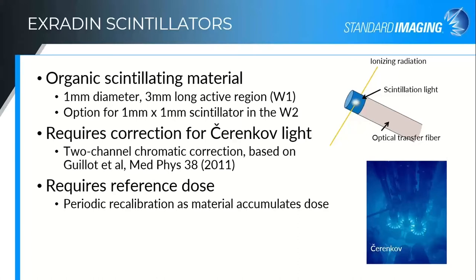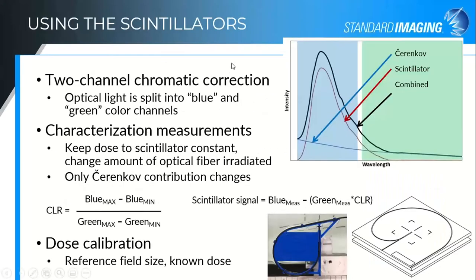You do need to recalibrate it periodically as it accumulates dose. We get about a 2% decrease in signal for every thousand gray that it receives. The two-channel chromatic correction splits the optical signal into two sections of the spectrum — we call one the blue region and one the green. The blue region is primarily the scintillation signal along with some contaminant Cherenkov, and the green is primarily Cherenkov, although a little bit of the scintillation signal bleeds over into that as well.